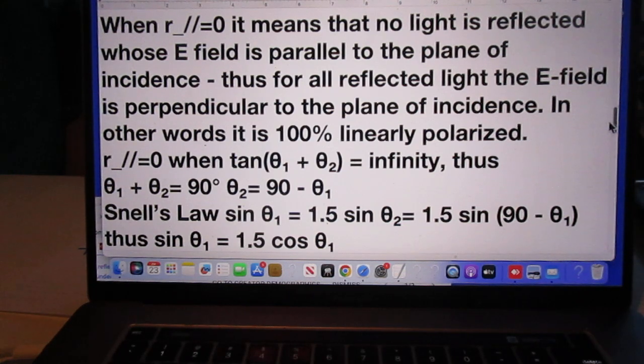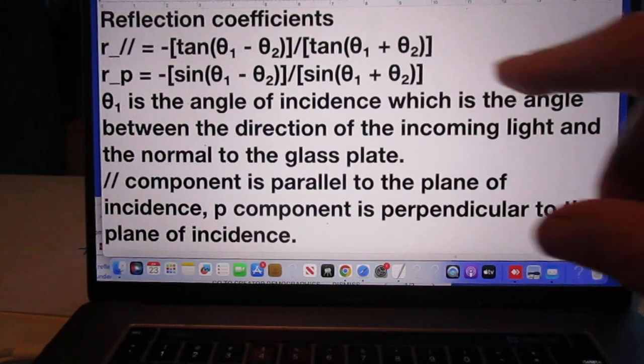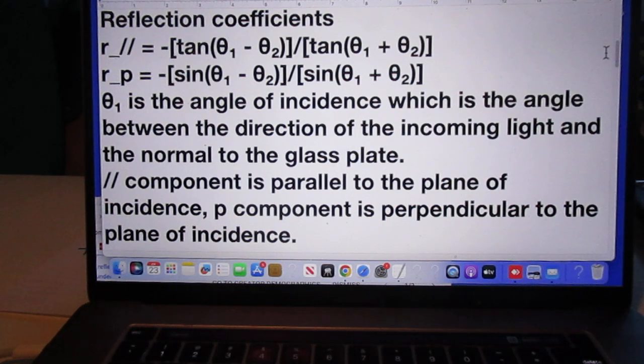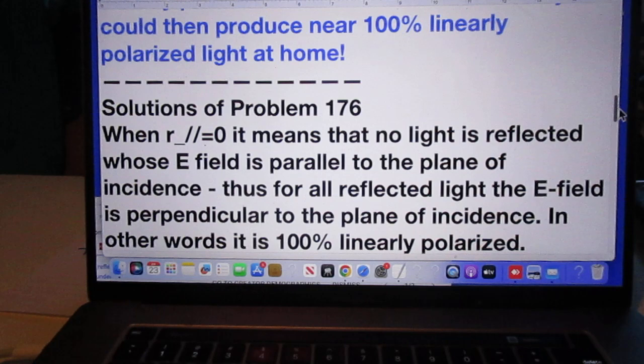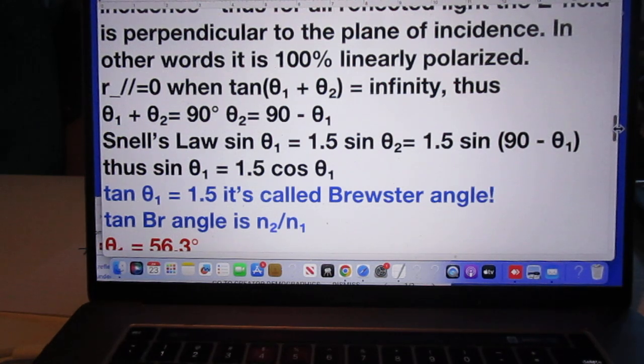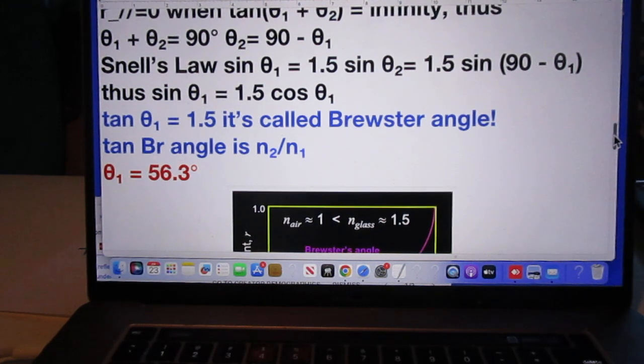So, when is R parallel equals zero? It is very easy. R parallel is zero if this is infinity. Therefore, if theta 1 plus theta 2 is 90 degrees. Theta 2 is therefore 90 minus theta 1. You now use Snell's law and you do a little bit of high school math and you find immediately that sine theta 1 is 1.5 times the cosine of theta 1. In other words, the tangent of theta 1 is 1.5.